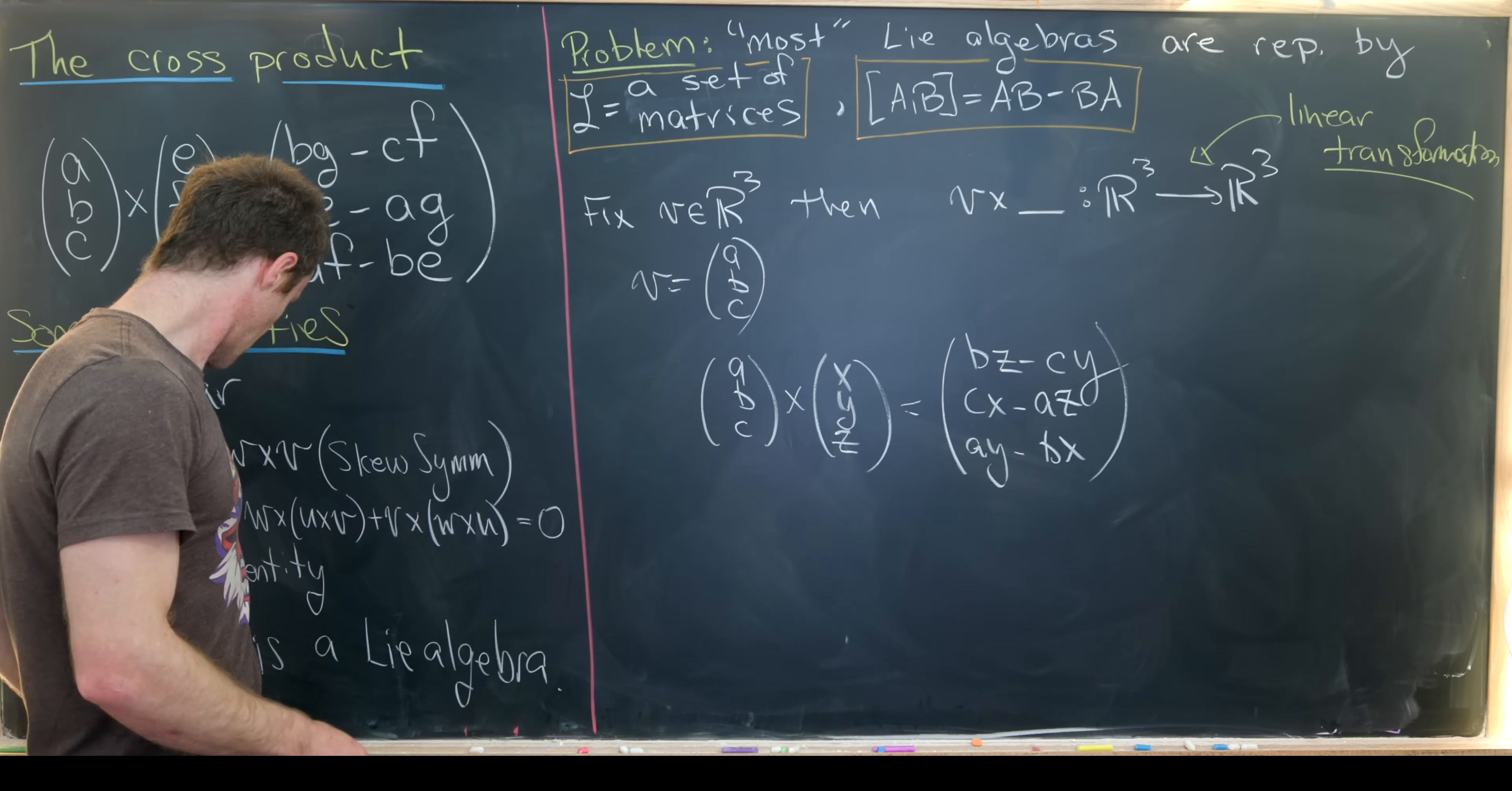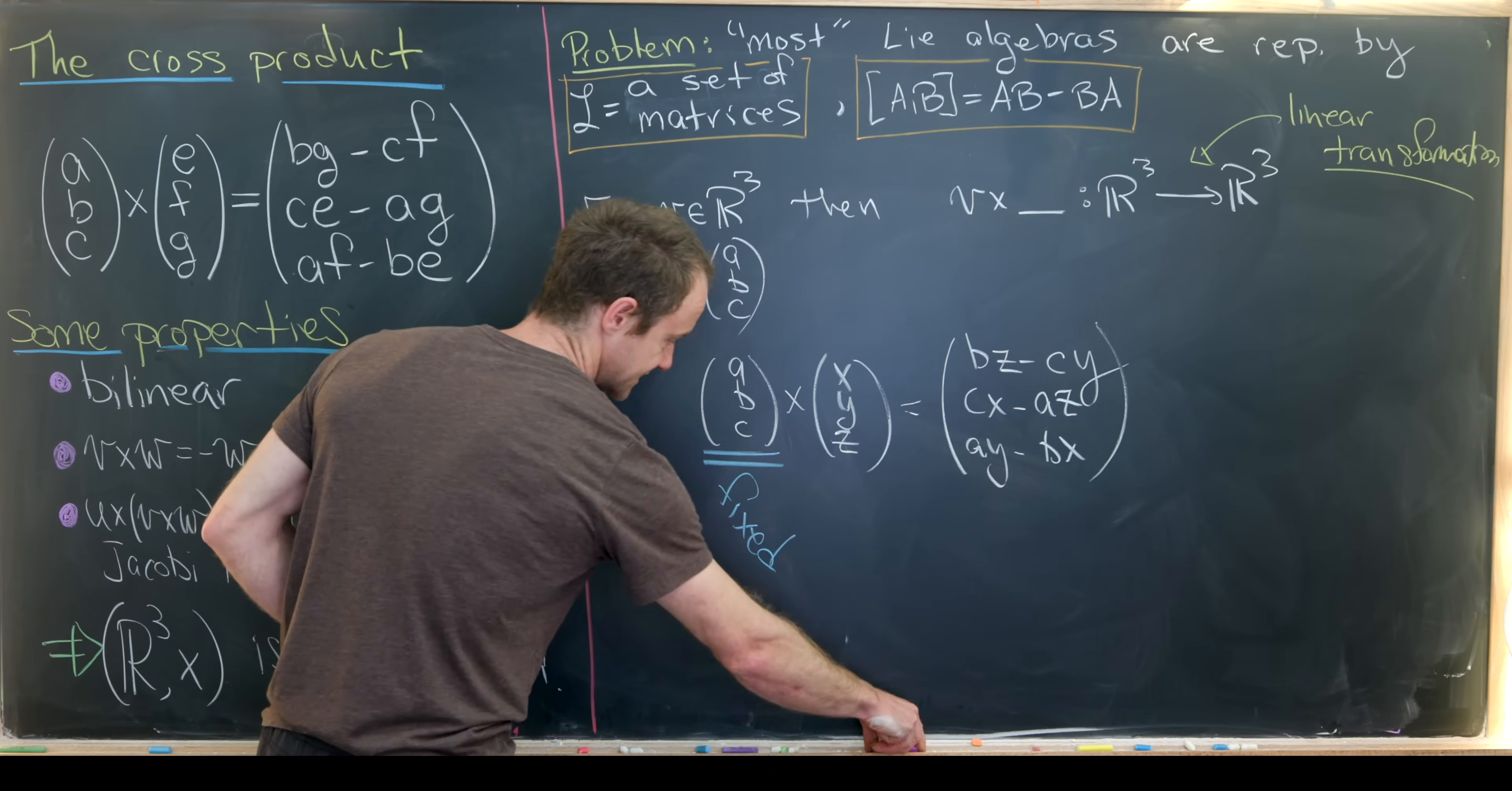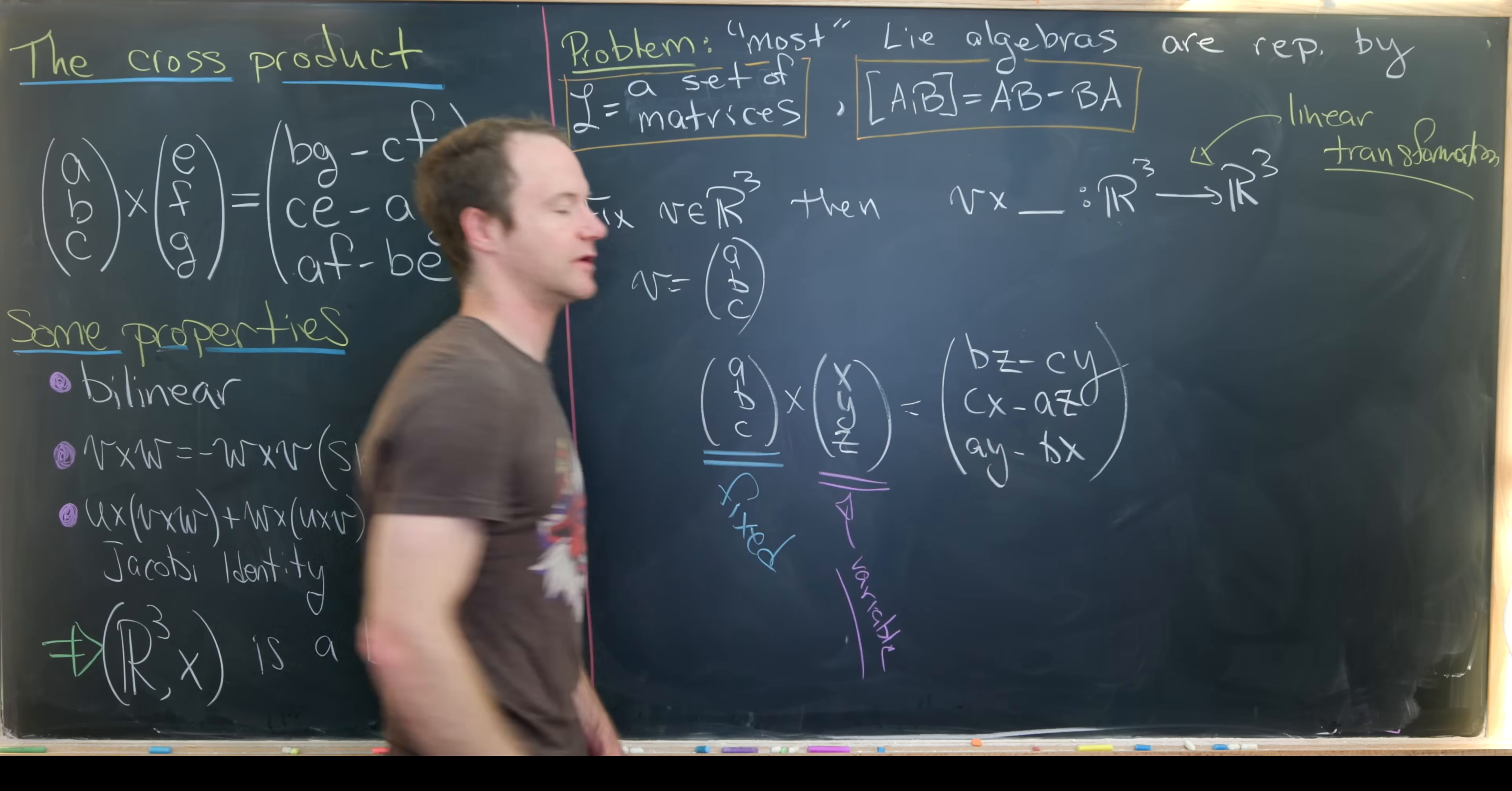That's going to give us the following vector. So we have BZ minus CY is the first entry. CX minus AZ is the second entry. And AY minus BX is the third entry. And so let's recall again, just to be careful, that this guy right here, this ABC is fixed. Whereas this thing right here is variable.